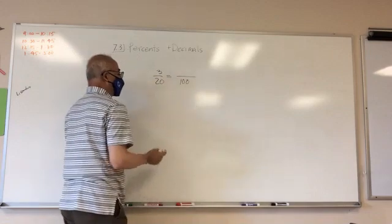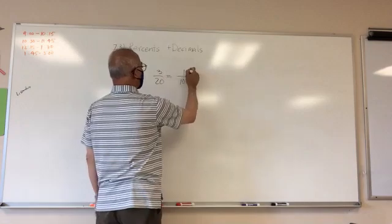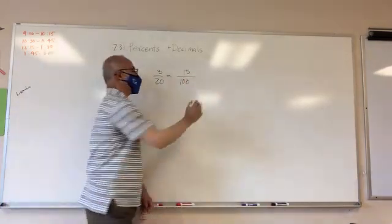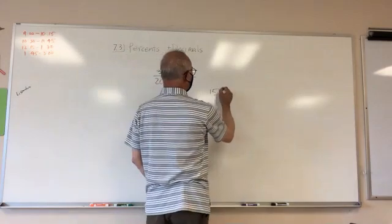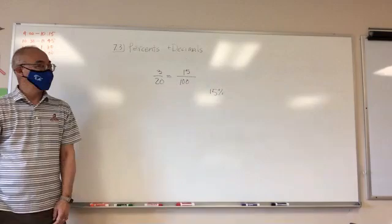So I can multiply this guy by 5, multiply this guy by 5 also, and I said 3 over 20 is the same as 15 percent. So this is what we did earlier.